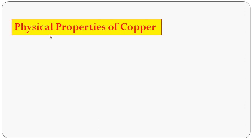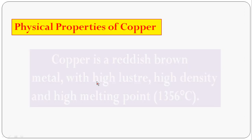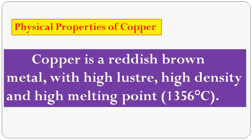Now the physical properties of copper: copper is a reddish-brown metal. It has high lustre, high density, and a high melting point of 1356°C. These are the physical properties of copper.